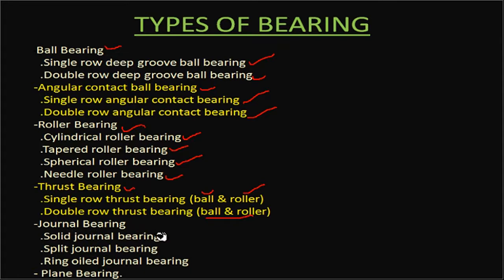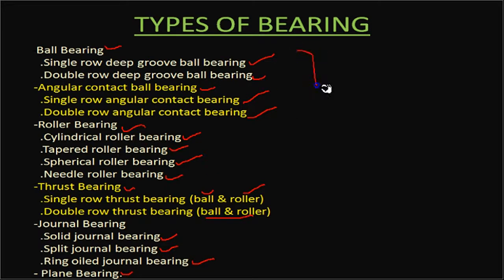Journal bearings include solid journal bearings, split journal bearings, and ring-oiled or plain journal bearings. Our focus in this unit is on ball and roller bearings; journal bearings will be covered in a later unit.